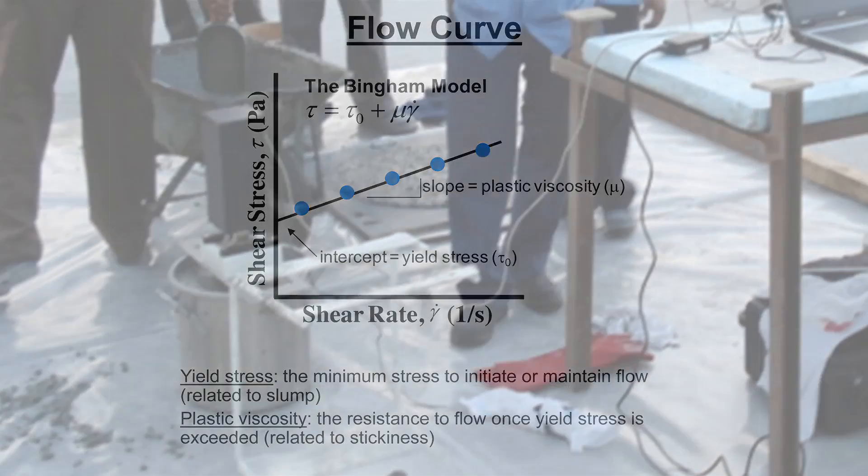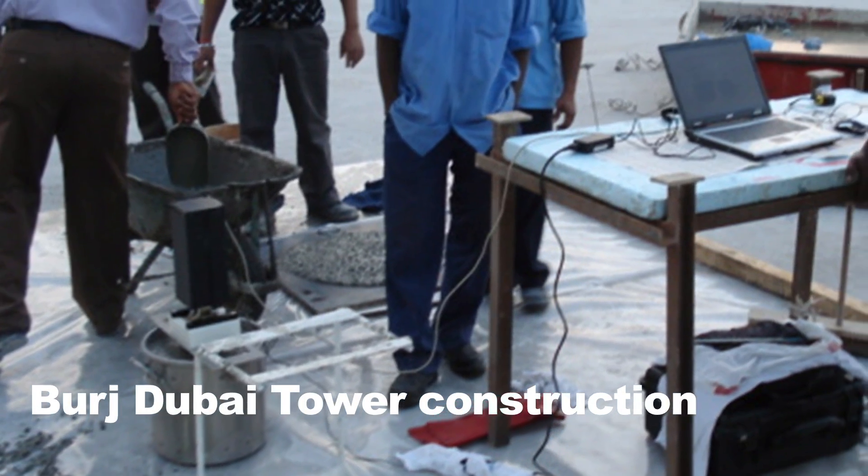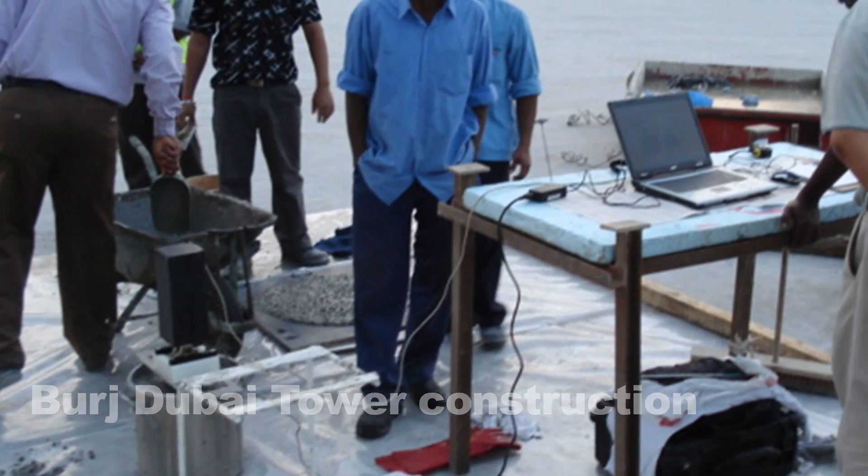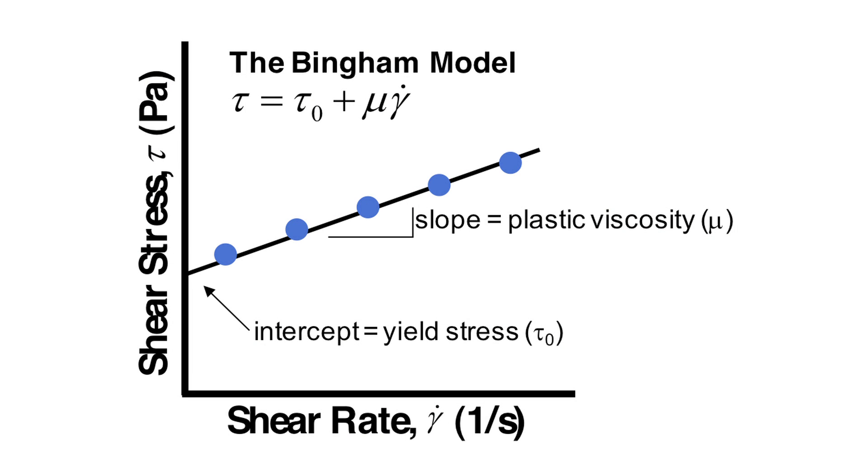When we measure rheology with the rheometer, we're going to measure this relationship between shear stress and shear rate. We'll then fit this Bingham model line to the data to determine our yield stress and plastic viscosity.